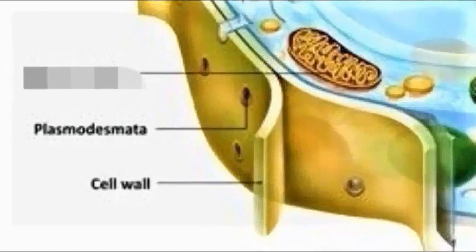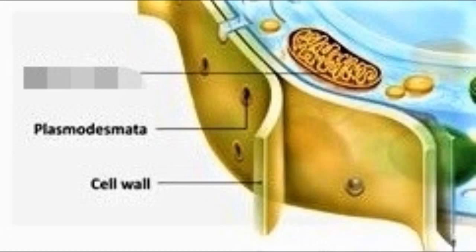For the third one, we have the cell wall. Cell wall is only found in plant cells. It is a rigid layer that is located outside the cell membrane. Primary function of the cell wall is to protect and provide structural support to the cell. It also filters the molecules passing in and out of the cell.